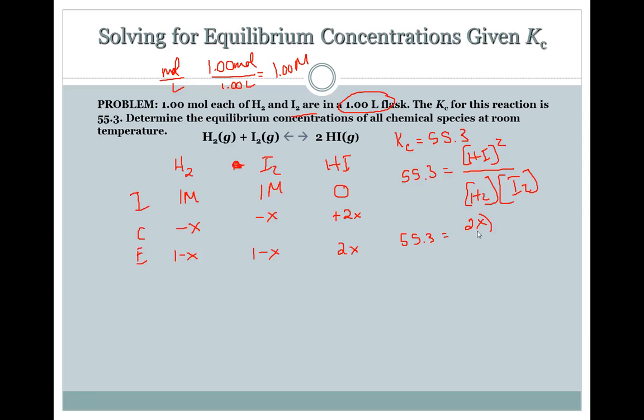But we need to figure out what X is. And we know that Kc is 55.3. So 55.3 is equal to HI squared over H2I2. So that means 55.3 is equal to 2X squared over 1 minus X, 1 minus X.